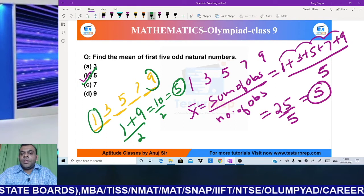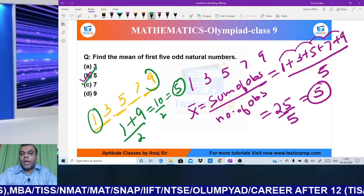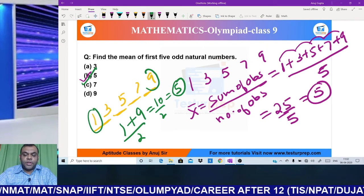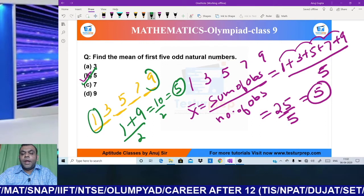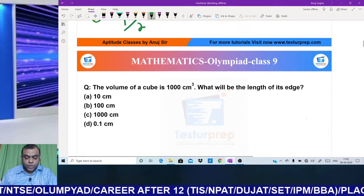I've taught you both a normal method and an Olympiad shortcut method. You can use whichever you prefer. But remember, the green method only works when the difference is same throughout the sequence. If the difference isn't the same, we cannot apply this method. I hope this is clear. Let's move on to the next question.